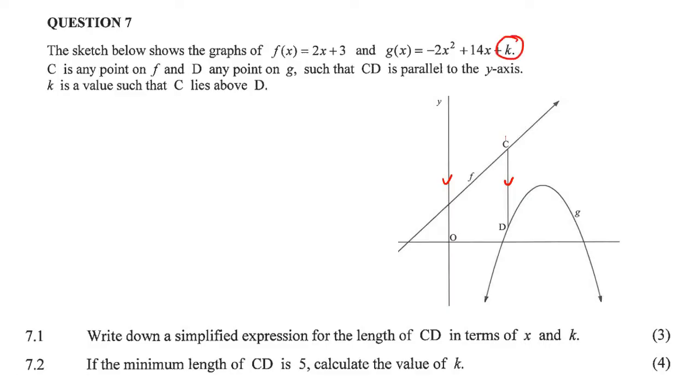So k we don't know, but k is such that C is always going to be above D. It says write down a simplified expression for the length of CD in terms of x and k.